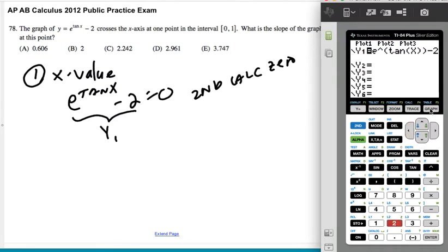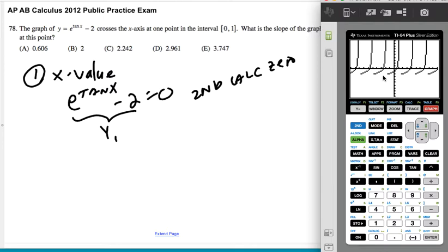Double check that you're right, and then I'm going to go ahead and graph. Now there's a ton of these, but the one I want is in this interval from zero to one. So I'm going to do second calc zero, and I'm going to scroll up here. I'm to the left of the zero. I cross the axis. I'm to the right of zero and hit enter. That's the x value I want.